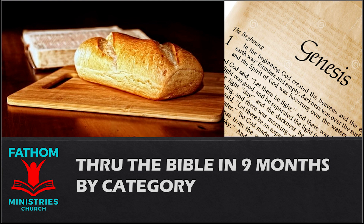Our fourth category encompasses the books of the Old Testament known as the Wisdom Literature. These books include Job and Psalms, Proverbs, Ecclesiastes, and the Song of Solomon. Psalm 35. Contend, O Lord, with those who contend with me. Fight against those who fight against me. Take hold of shield and buckler and rise for my help. Draw the spear and javelin against my pursuers. Say to my soul, I am your salvation.